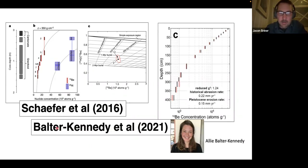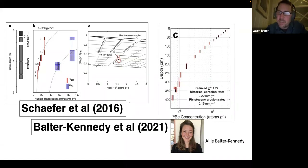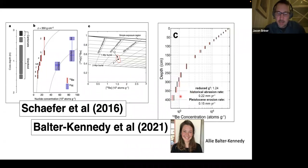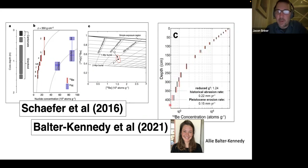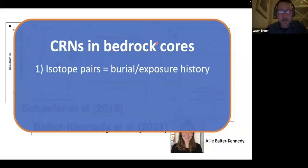Since that paper, Ali Balter-Kennedy — a PhD student at Lamont working with Joerg Schaefer — and I have worked together on a long bedrock core from near the terminus of Jakobshavn, a spray four-meter-long core. Here are the measurements per depth, showing that surface profile I was describing. Something she's been able to piece together is using the depth profile information to constrain glacial erosion rates — not so large as to wipe out the signal — and we can tell if we have an intact surface or not by measuring concentrations versus depth.